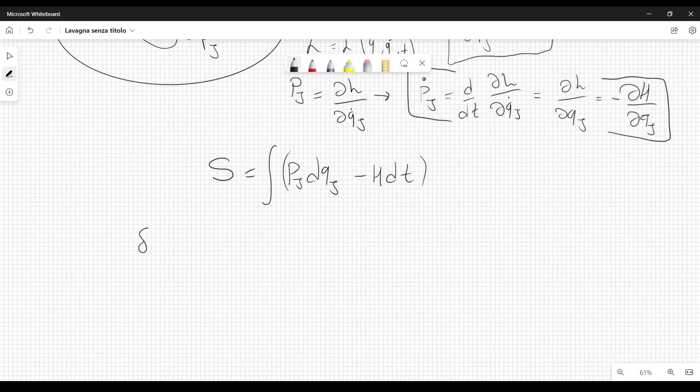We are integrating this. Now we will consider the variation of the action, and in this case, when we consider the variation, we are varying the coordinates and also the momenta, both of them.